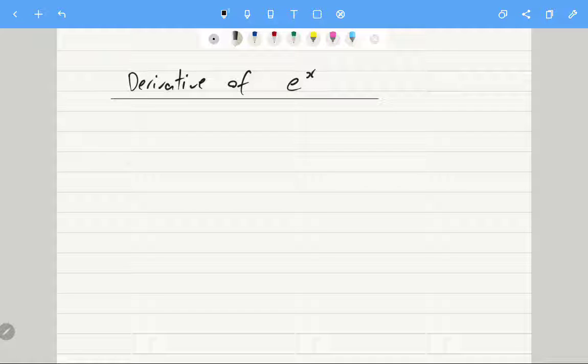So we ended up getting that if I wanted to take the derivative of a to the x, then I could eventually simplify it to a to the x times the limit as a to the h minus 1 over h for h goes to 0. This is what we proved in the last video.